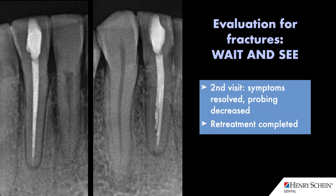Once I completed the endodontic treatment, we confirmed there was actually a second canal. After the two-visit treatment — removing the existing root canal filling material, placing calcium hydroxide, and then completing it after the symptoms resolved, including the sinus tract or other findings of an abscess or infection — we knew that was healing. Upon the second visit, this patient was confirmed not to have any fractures; it was just the missed canal. Since all her symptoms resolved and the probing decreased, we recommended the root canal was a success and that the tooth should be maintained. Re-treatment was definitely the best option for this patient.